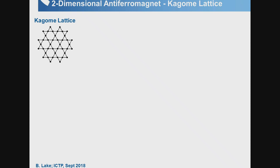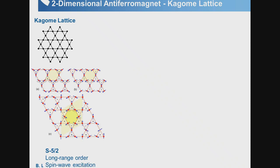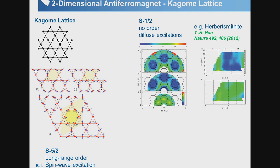Now to the kagome lattice — corner-sharing triangles. In the classical case, spin wave theory works adequately. But for spin-½, as in herbertsmithite, the constant-energy slices show broad, merged rings — never sharp rings. This is a sign of continuum scattering rather than sharp magnon excitations, indicating multiple particles and possibly spinon excitations.